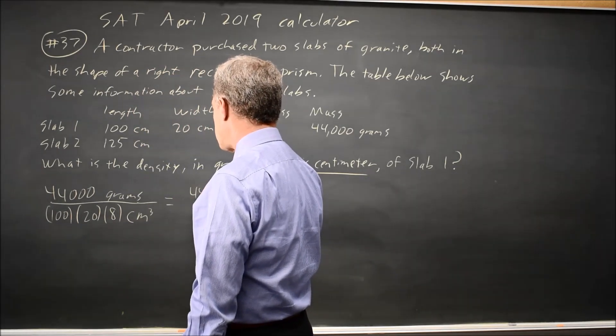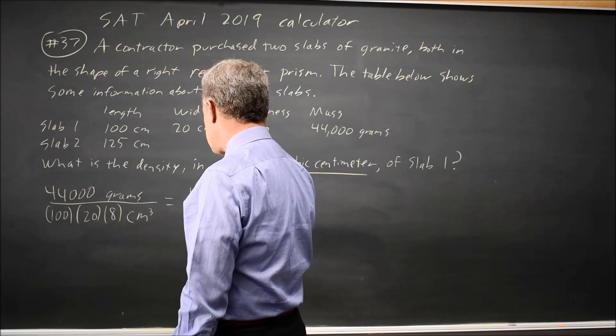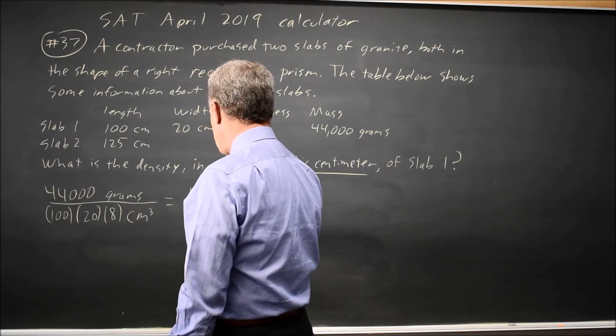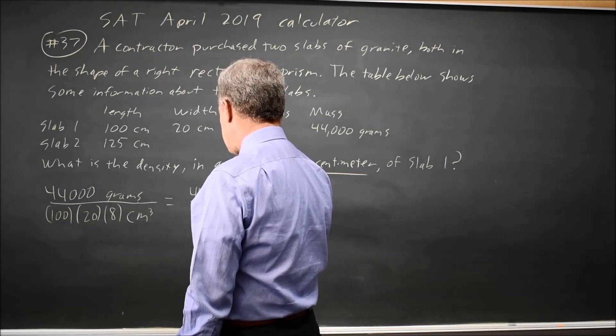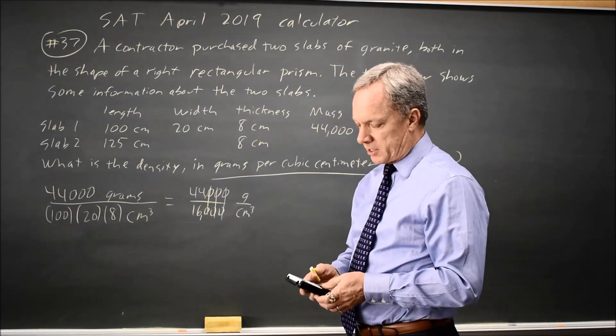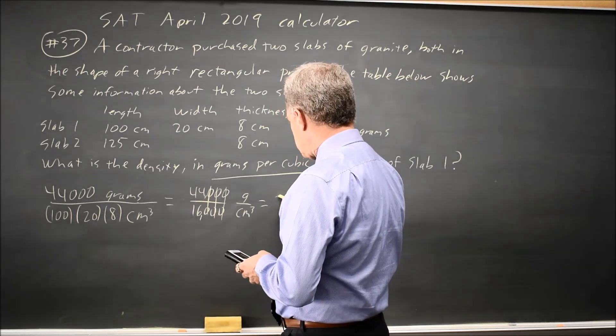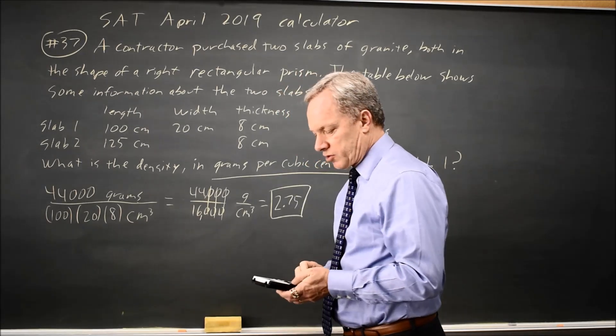So that's 44,000 over 16,000 in units of grams per cubic centimeter. It simplifies to 44 over 16, which you can do by hand on your calculator. That would be 2.75, and that's the answer they're looking for.